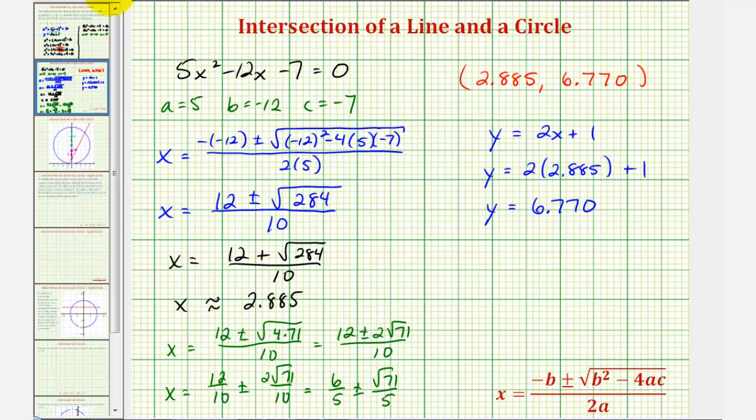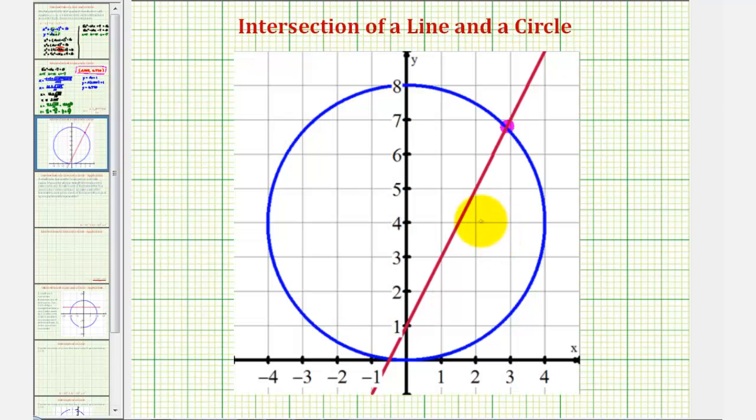And again, keep in mind, these have been rounded to three decimal places. So going back to our graph, this does seem to verify what we see graphically. The x-coordinate does appear to be a little bit less than 3, and the y-coordinate does appear to be less than 7. I hope you found this explanation helpful.